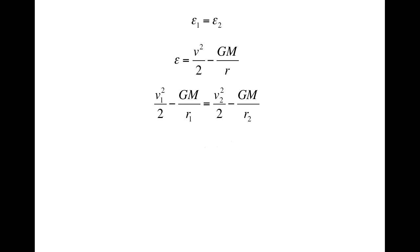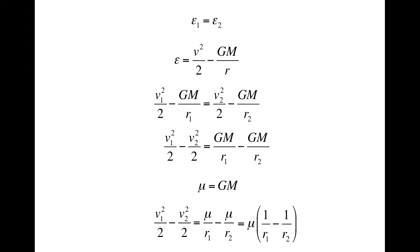Before going any further, let's clean this up a bit by getting the velocities on one side and the radii on the other. Also, both big G and big M are constants, so let's replace them with a single letter mu. This is a pretty standard thing to do. The mu is even given a name, the standard gravitational parameter. Substituting gets us this, and we can make it look a little better by taking the mu out as a common factor.